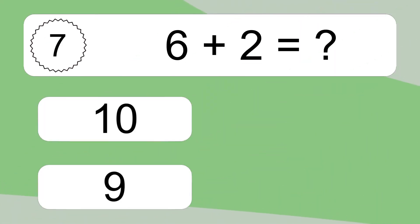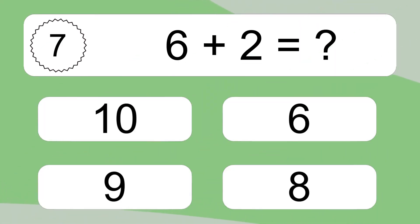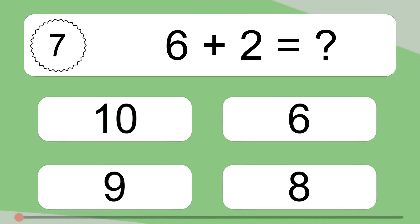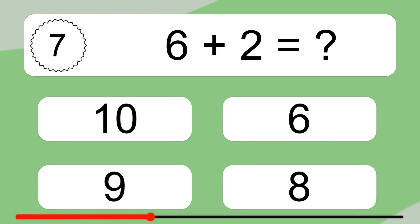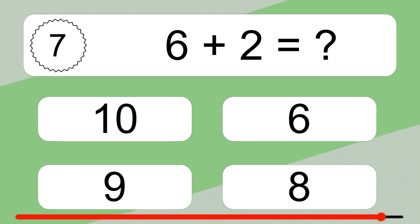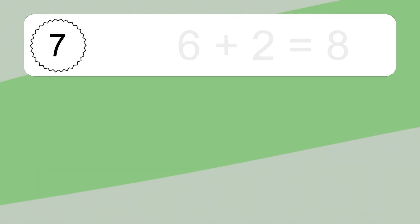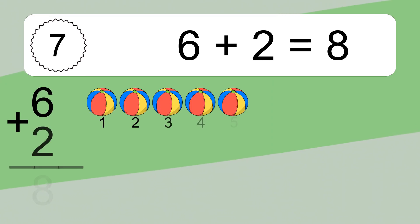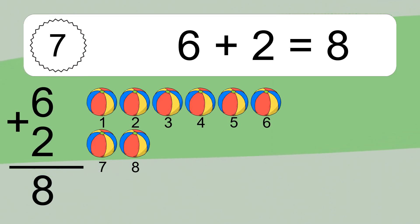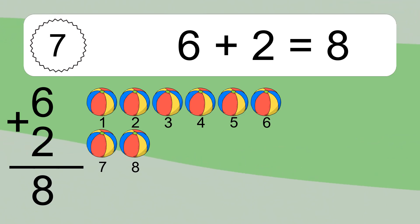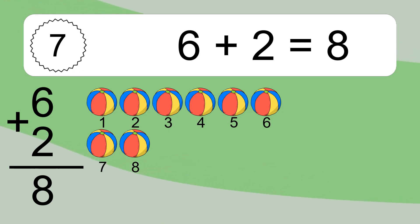6 plus 2 equals what? 6 plus 2 equals 8. Let's count it. 1, 2, 3, 4, 5, 6, 7, 8.